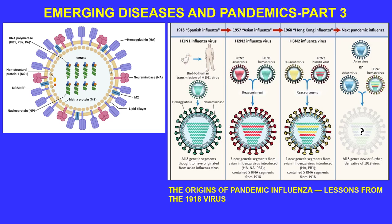Genetic shift is when a large portion of RNA changes because a new cassette is inserted. Since the eight segments are not connected, they can be shuffled around. This is thought to be what occurred with the Spanish influenza — H1N1 — where the virus transmitted from birds to humans. Because humans had never encountered this particular strain, it had a higher mortality rate.